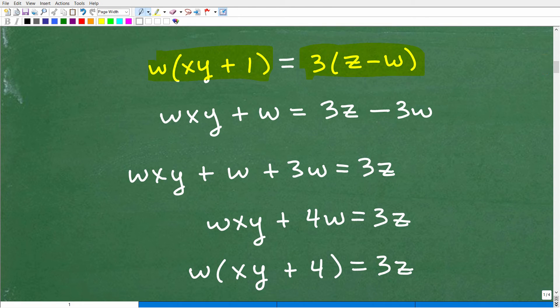Now we have really no choice but to use the distributive property. And you've got to take this step so we can see what terms we're working with. So W times XY, WXY, W times 1, W, 3 times Z, 3Z, and 3 times W, 3W.